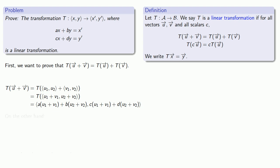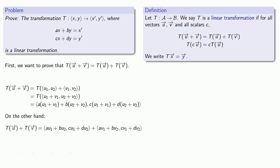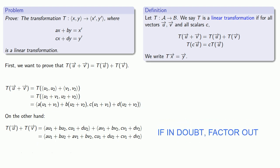Now let's compare it to the transformation applied to u plus the transformation applied to v. If I apply the transformation to u, I get the vector with components au1 plus bu2, cu1 plus du2. And if I apply the transformation to v, I get the vector av1 plus bv2, cv1 plus dv2. These are vectors, so I can add them together. And while we hate to reduce mathematics to bumper stickers, a useful mantra is: if in doubt, factor out.